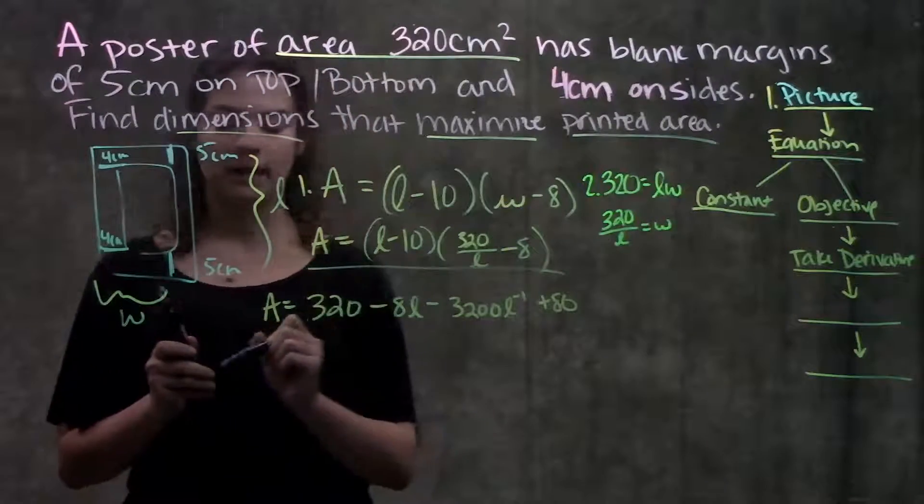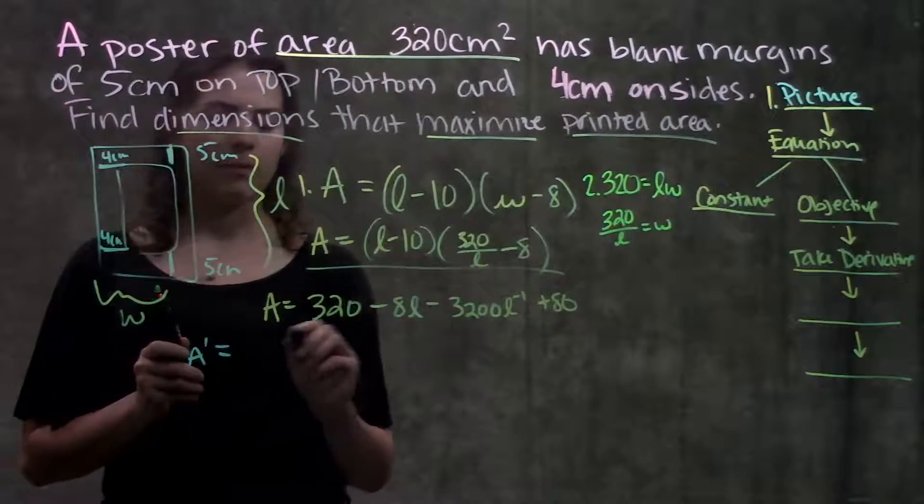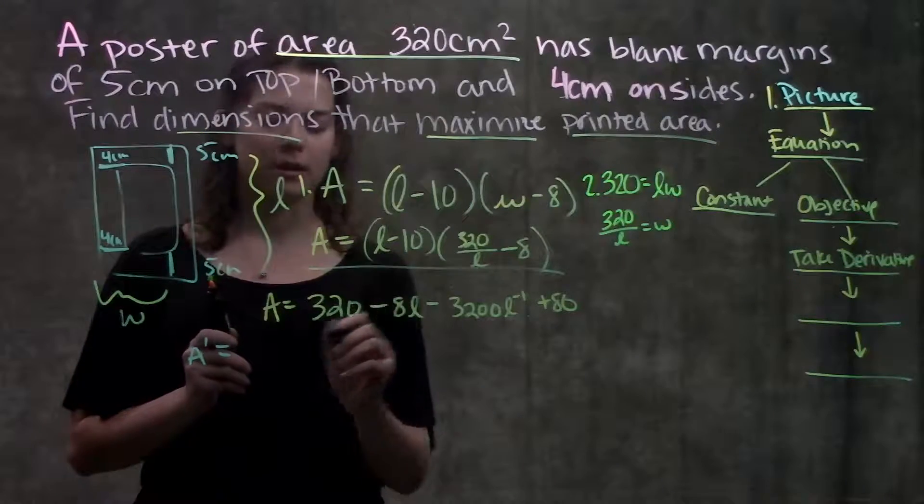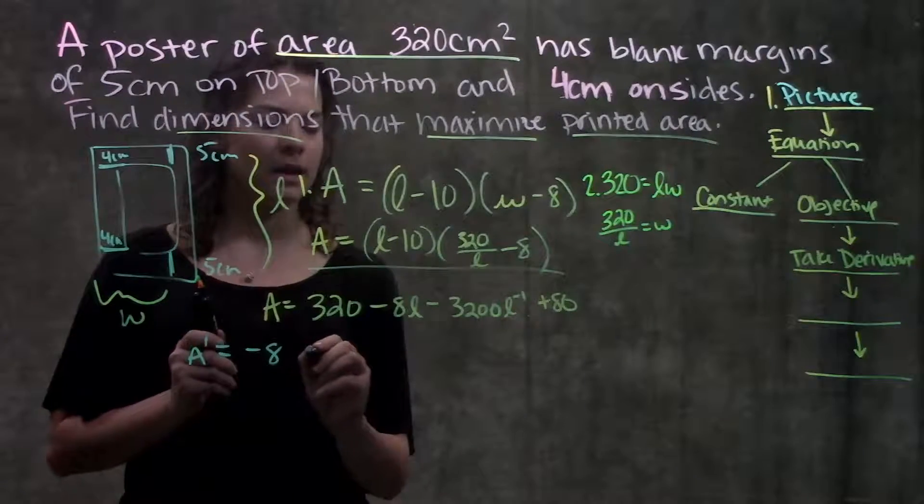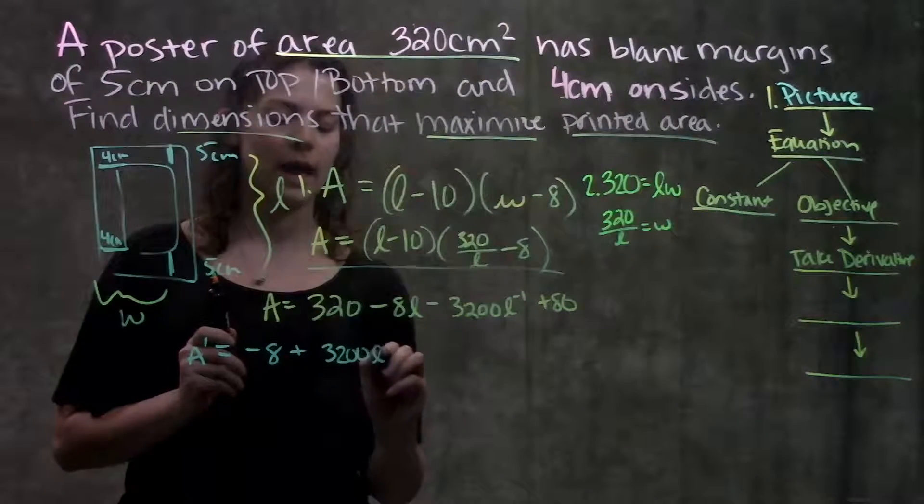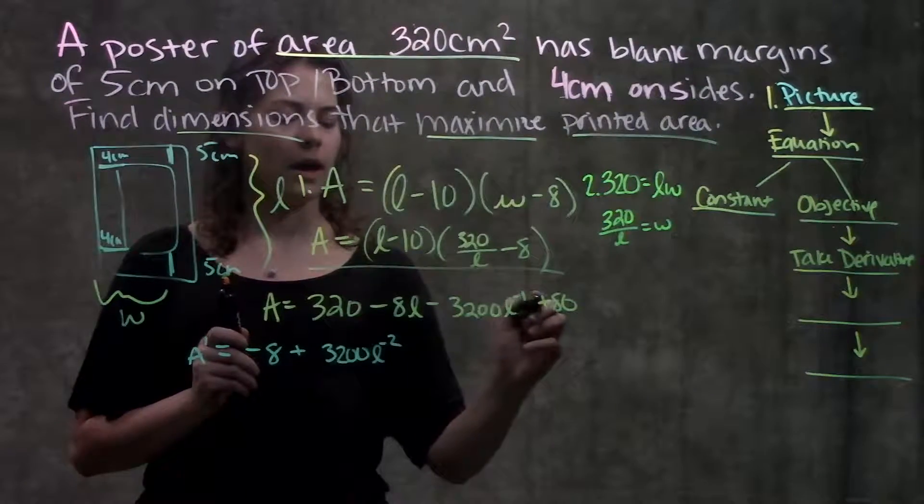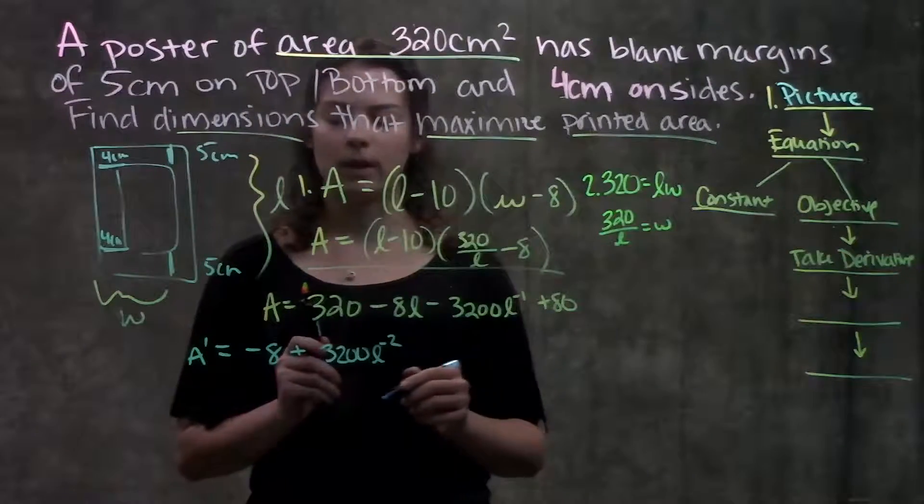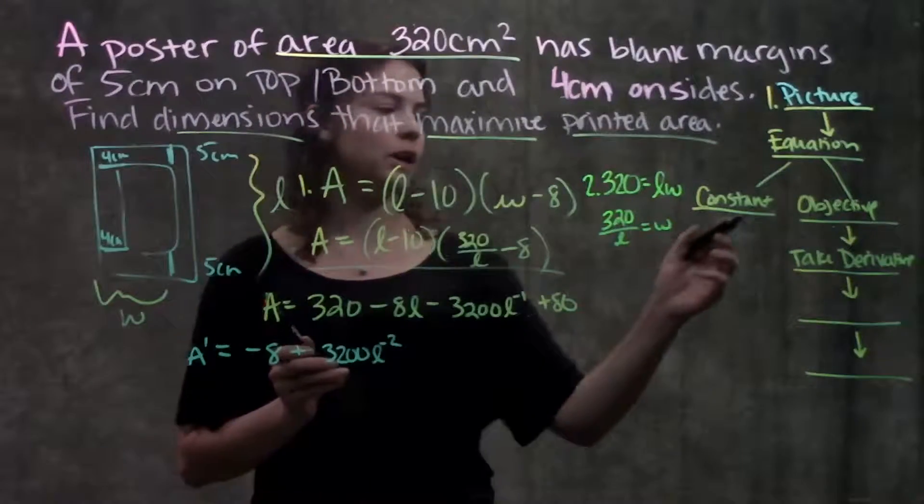Okay, here's my equation. Now I'm going to take the derivative of it. A prime is equal to, this becomes 0, minus 8, bring my negative to the front, so plus 3200 L to the negative 2. And plus 80, that becomes 0 as well.